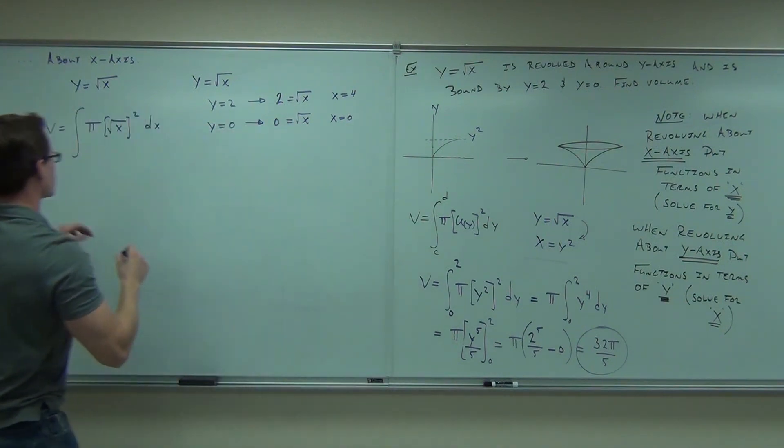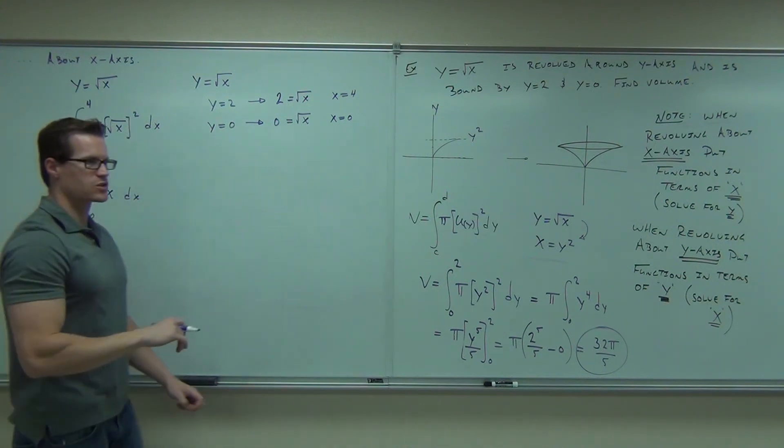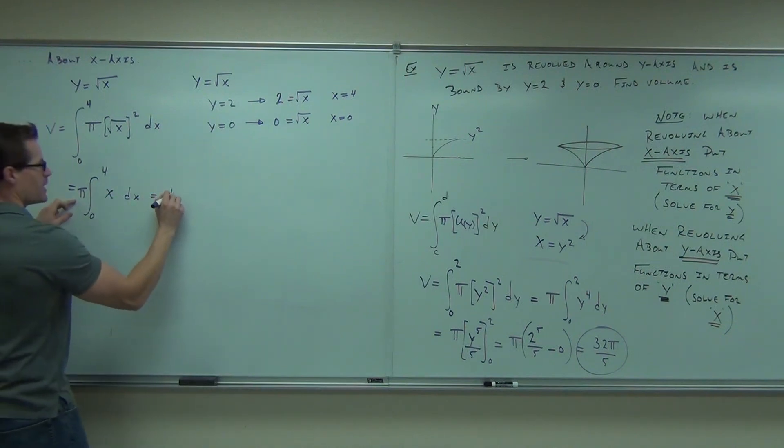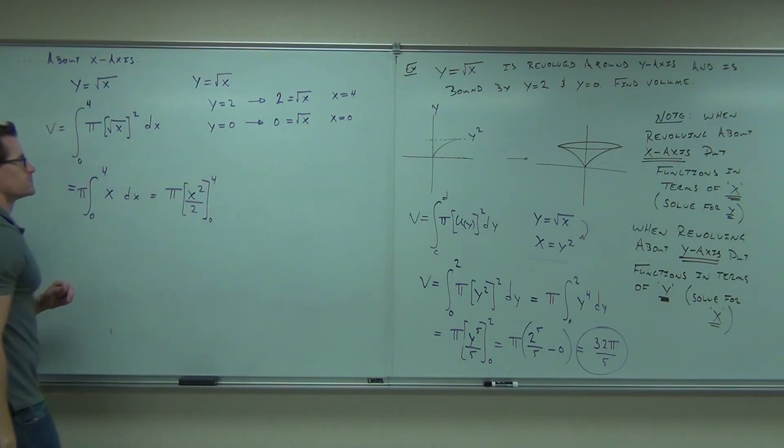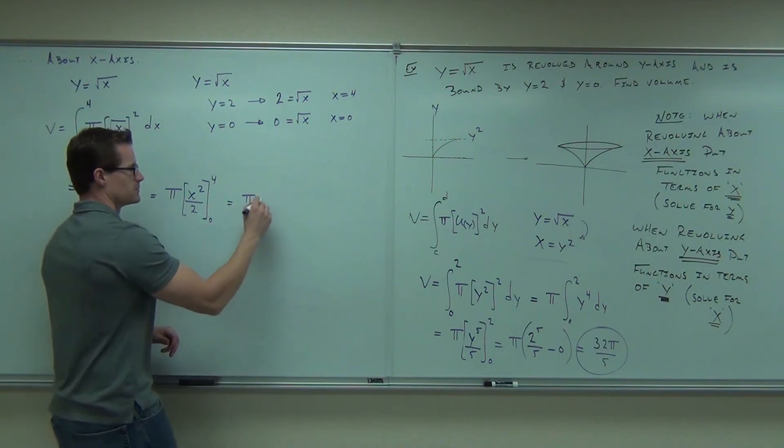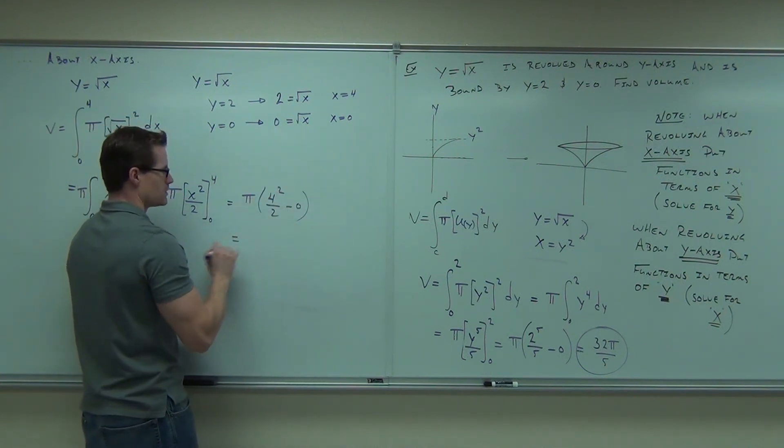So now we'll have an integral from 0 to 4. It's going to be a pretty easy integral. It's going to be pi 0 to 4 of x dx. Square root of x squared is x. That's kind of awesome. That's great. Then we'll have pi x squared over 2 from 0 to 4. Pi 4 squared over 2 minus 0 equals?